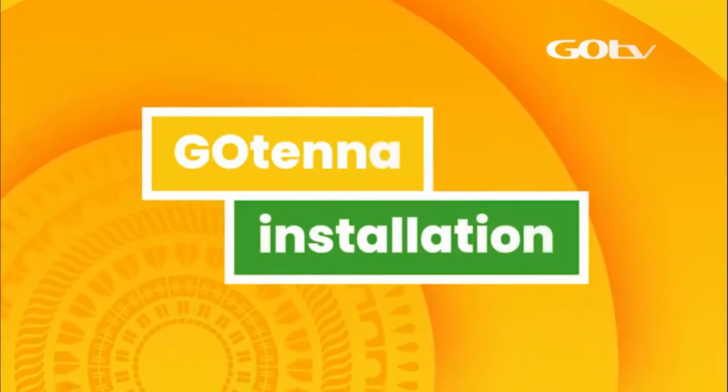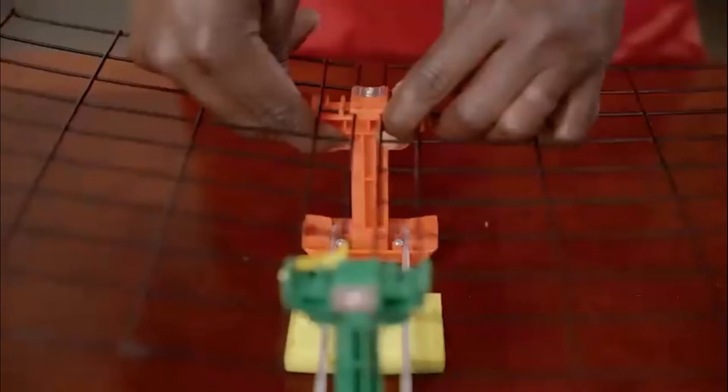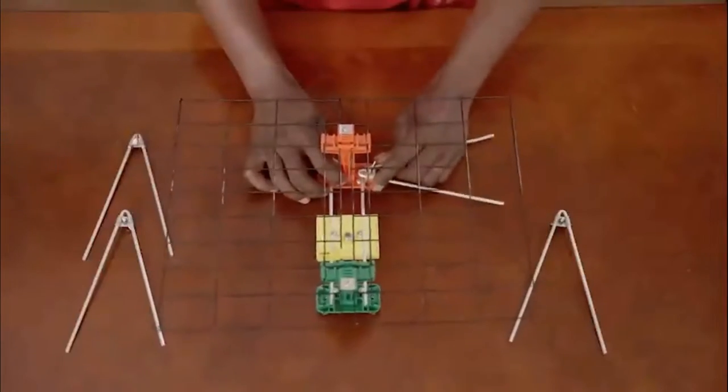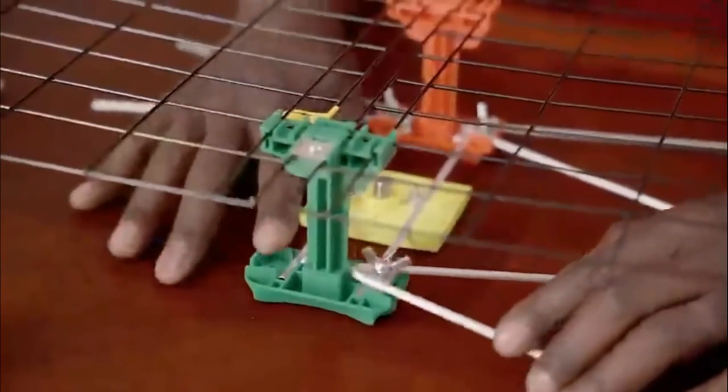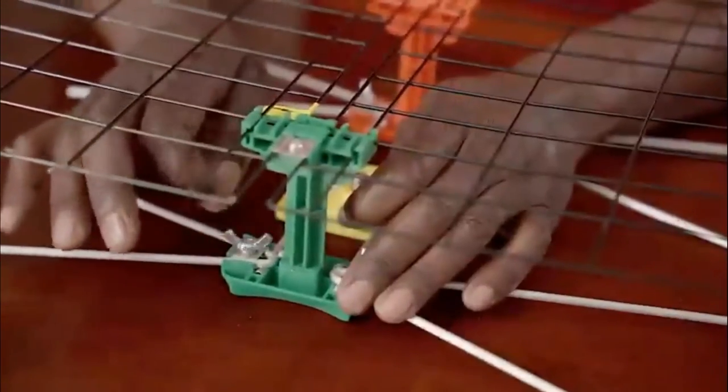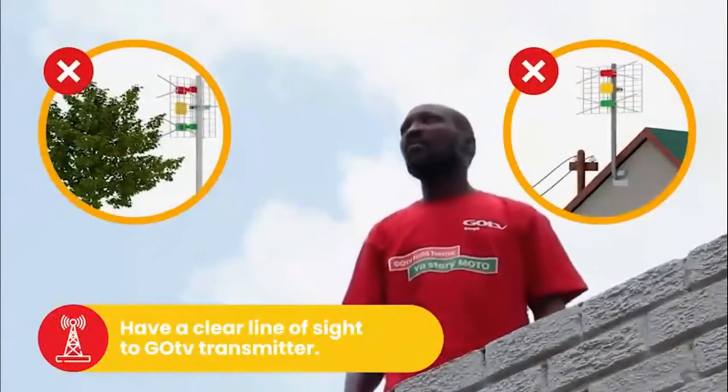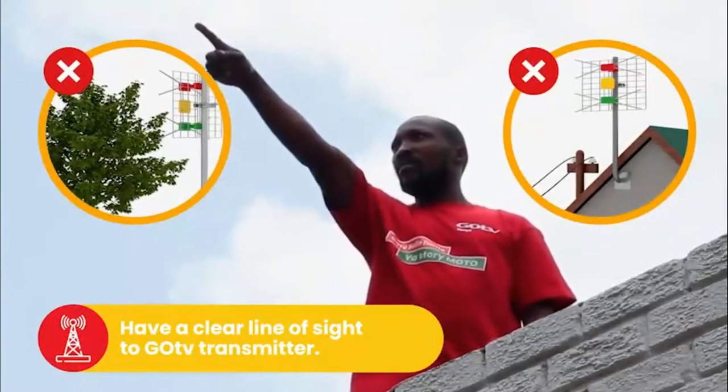Let's start with the GoTenner installation. Carefully unfold the steel grid and firmly click into position. Next, fasten the V-shaped dipoles to the underside of the red and green dipole holders using the butterfly screws. For best signal quality, your antenna should have a clear line of sight to the GoTV transmitter and be free of obstructions like trees and power lines.